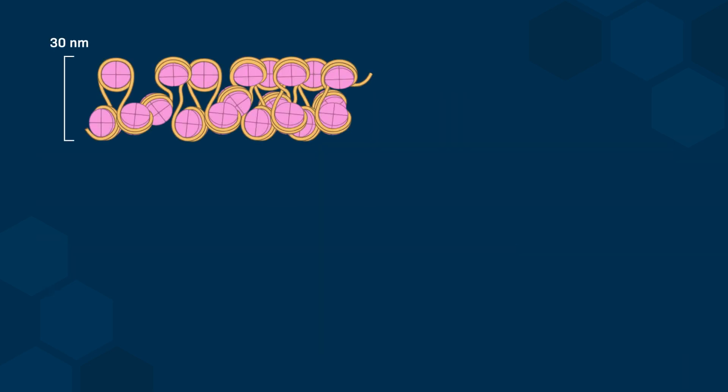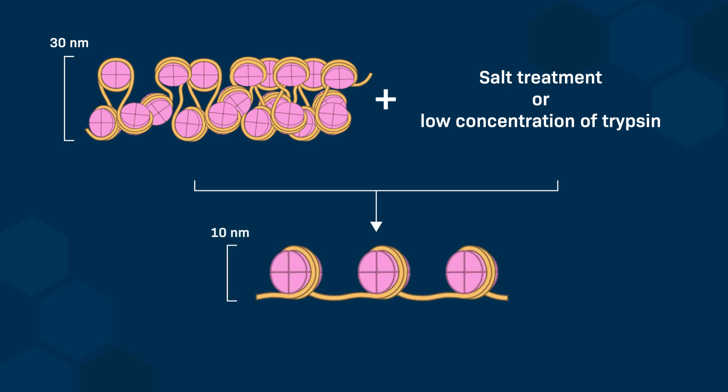If we treat our gently extracted native 30 nm chromatin fiber with salt or a low concentration of trypsin, it reveals a thinner 10 nm chromatin fiber. In this 10 nm fiber, the nucleosomes are spaced further apart, which results in less compact chromatin.